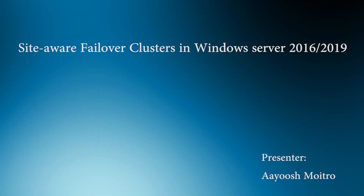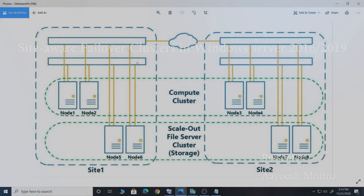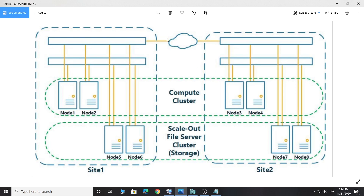Let's quickly jump into the lab and see what the site-aware feature is. This is a typical site-aware setup where we have two different sites — Site 1 and Site 2. On the left-hand side we have a few cluster nodes running, and on the other side we also have two nodes. All these nodes are part of the common cluster but are kept at different geographical locations. We also have Node 5 and 6, which are the storage boxes placed on each site. In this diagram we are using Scale-Out File Server cluster, which is SOFS.